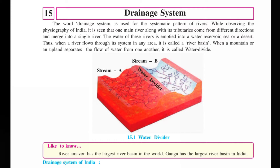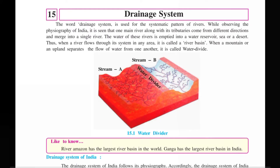Like showing a different line in a graph, the water divider is shown in figure 15.1. While observing the physiography of India, it is seen that one main river along with its tributaries comes from different directions and merges into a single river. All tributaries ultimately flow into one single river, which empties into a water reservoir, sea, or desert.